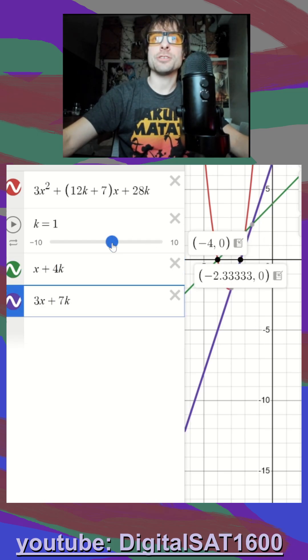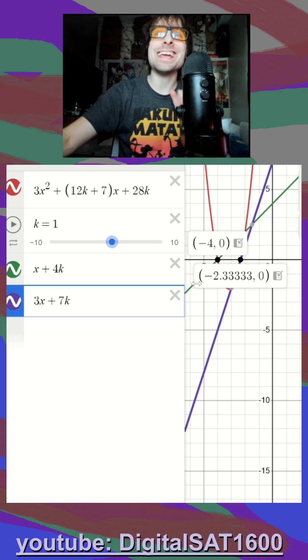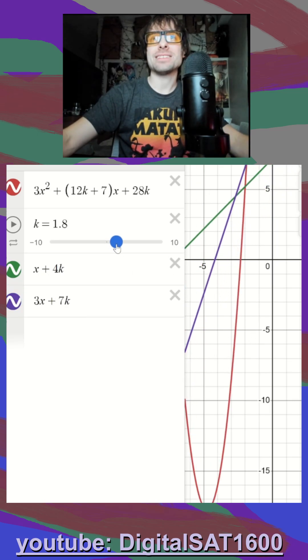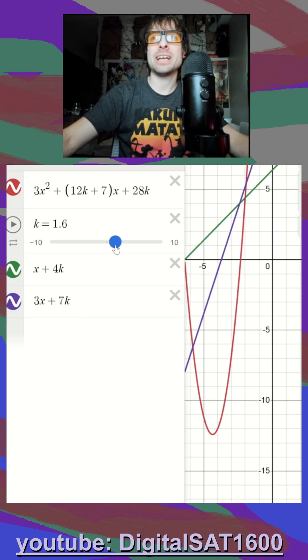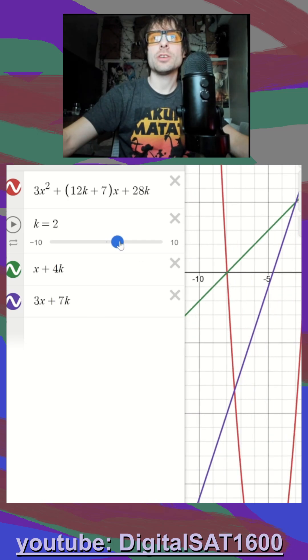That's because you have to slide your k value to make sure they stay solutions. So as I slide this, you can see the purple line immediately falls off. The green line stays on.